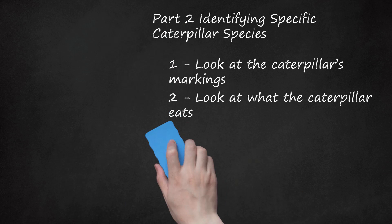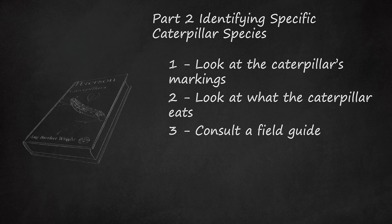Consult a field guide. If you're not familiar with the caterpillar species in your area, or encounter a different species when traveling, you can consult a field guide. Two good guides for children are The Peterson First Guide to Caterpillars by Amy Wright, and Golden Guide to Butterflies and Moths by Robert T. Mitchell. Guides for adults include Thomas J. Allen's Caterpillars in the Field and Garden, and David J. Carter's A Field Guide to Caterpillars of Butterflies and Moths in Britain and Europe.